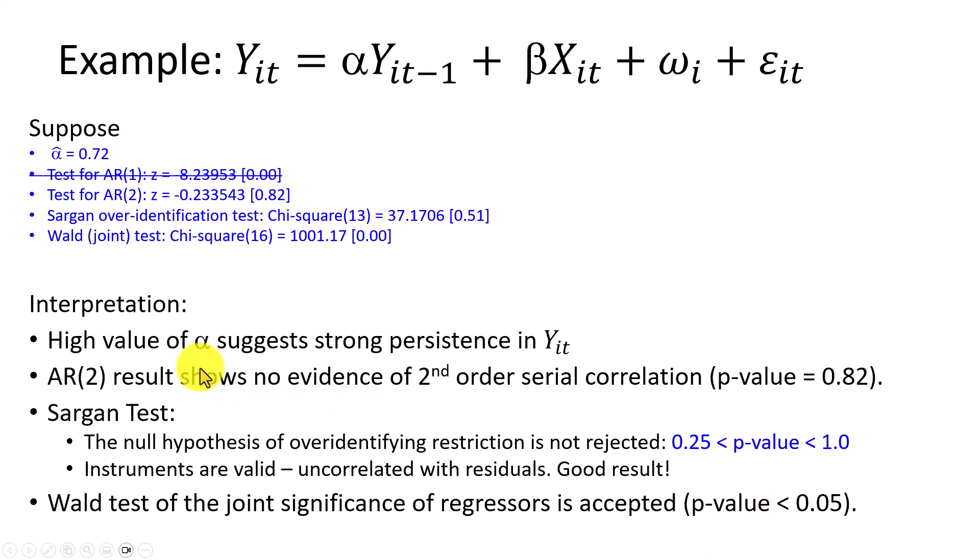So as a quick example, suppose what you see here in blue is the outcome of a panel data GMM regression. On purpose, I've struck out the result for AR(1), since that's not really relevant. What's relevant is AR(2). So to give this a quick interpretation, looking at the coefficient of the lagged dependent variable, we can see here, which is 0.72, we can see here that this suggests strong persistence in the model, in the dependent variable, because this is pretty high.